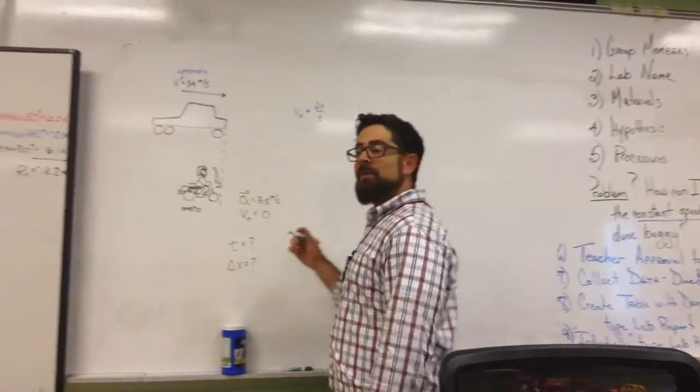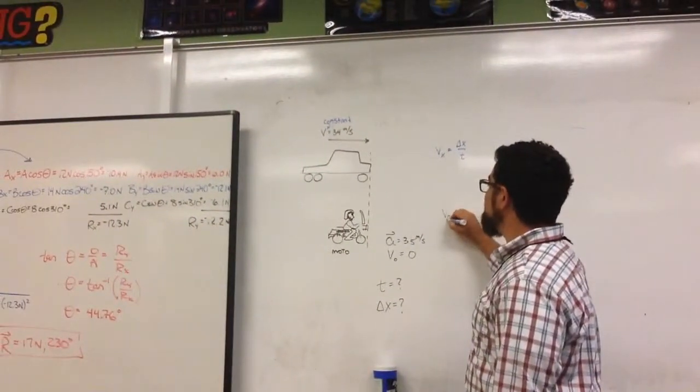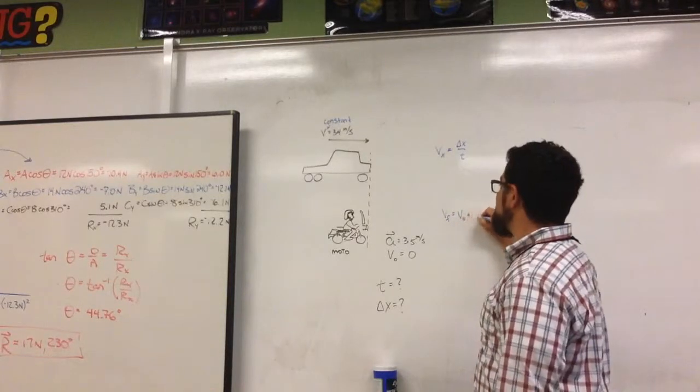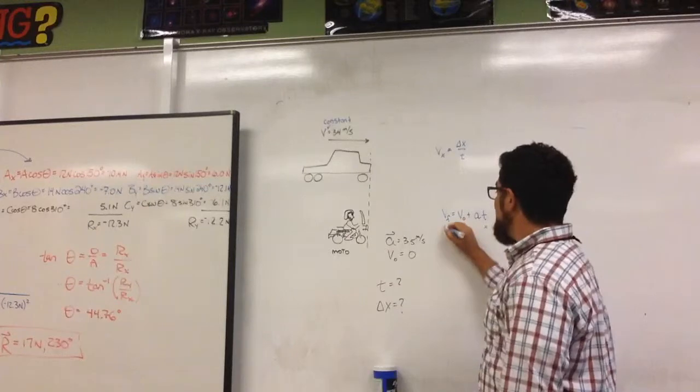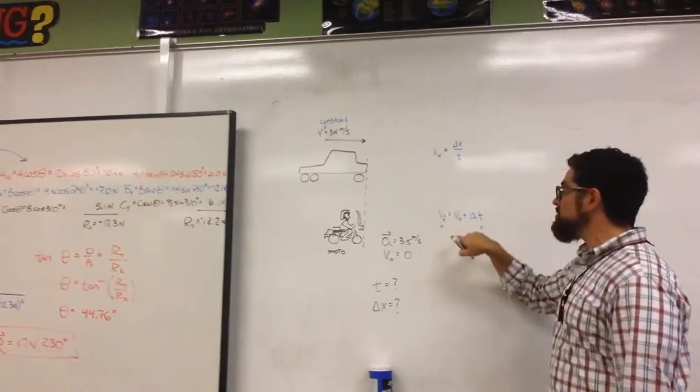Anyone? Okay, so the second one would be v-final equals v-initial plus acceleration times time, where time is not known and the final velocity is not known. There are two unknowns here.